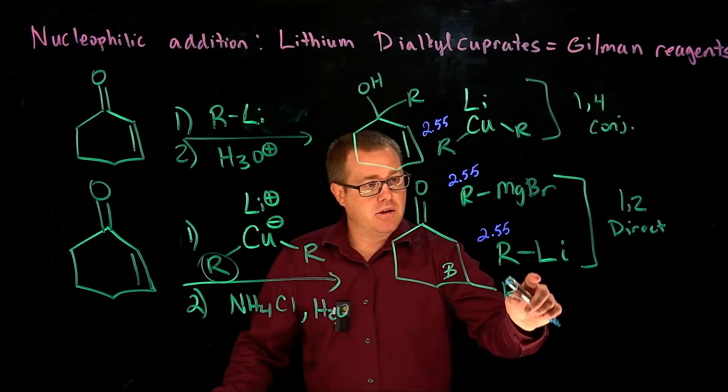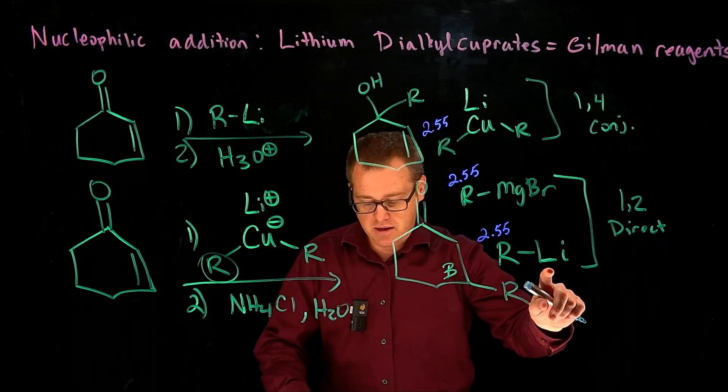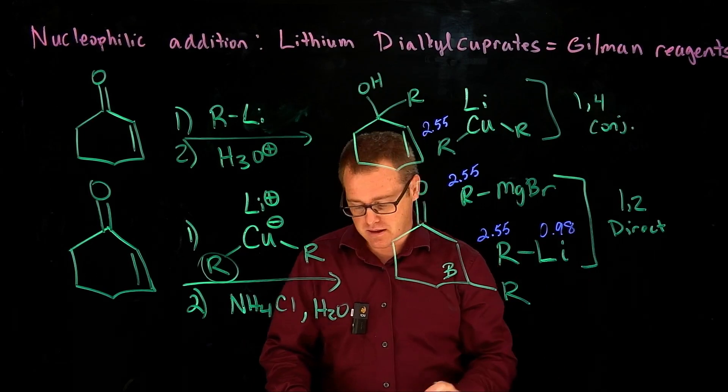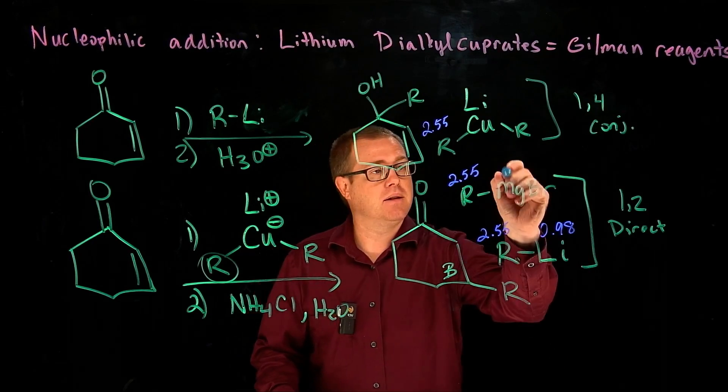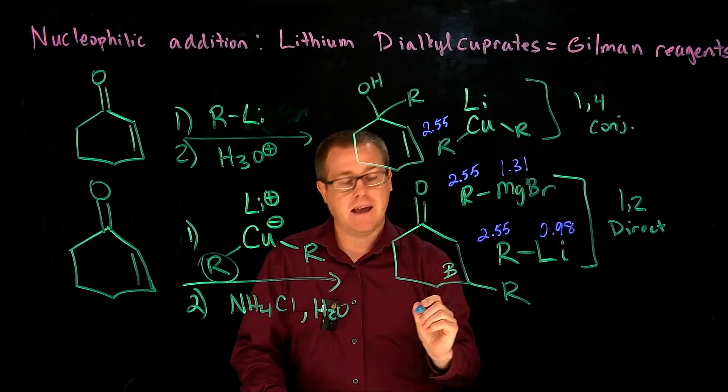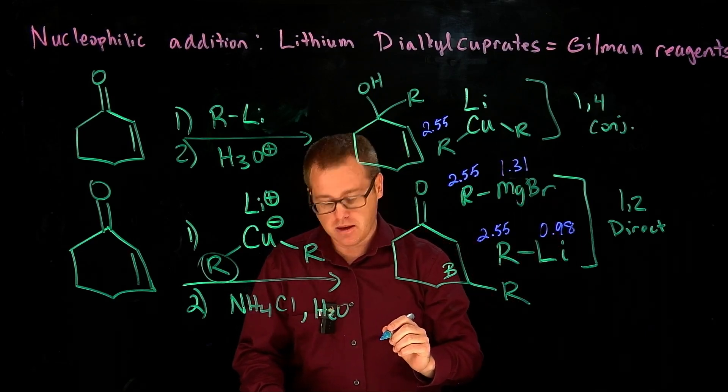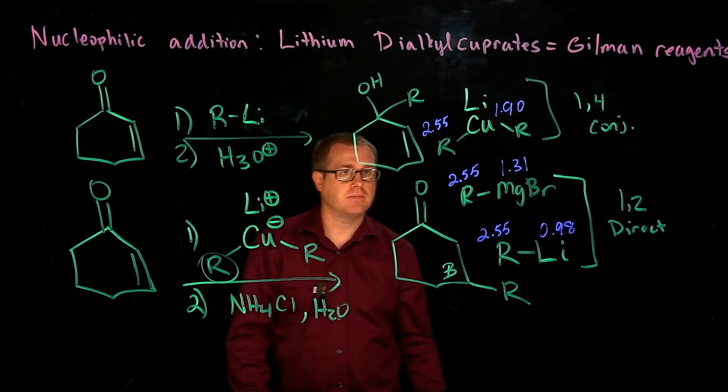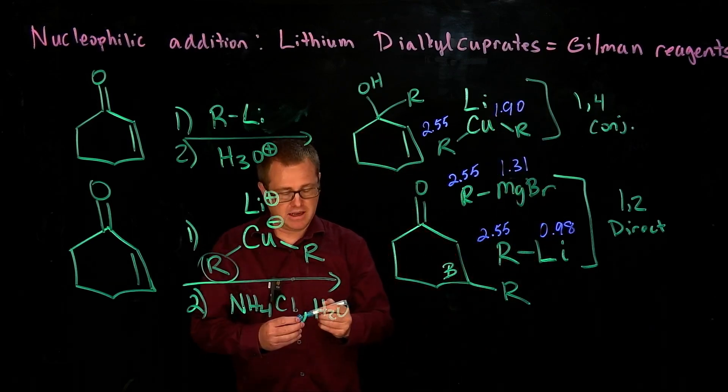Now, when we take a look at the lithium here, that is 0.98, and magnesium is 1.31, and copper is 1.90, right there. And so what's happening here?